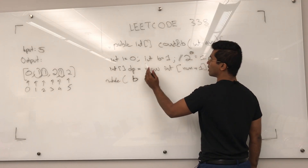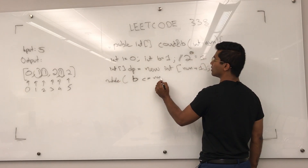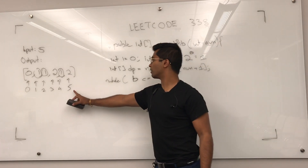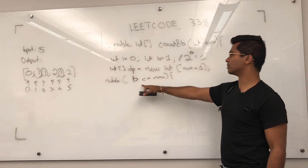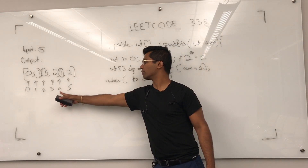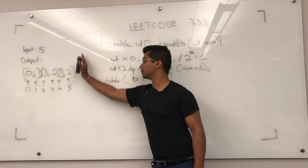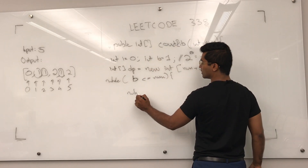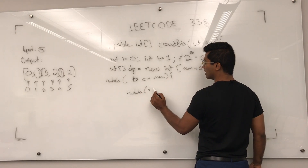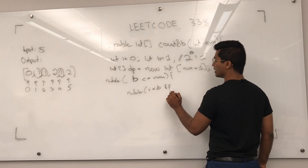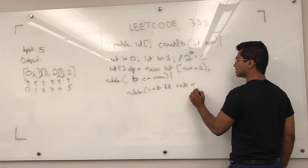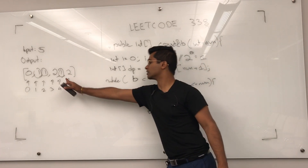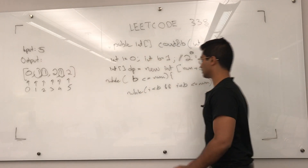We do a while loop where b is the current power of 2, and we do not want it to go more than num. For example, if b is going to be 2 to the power of 2 which is 4, we're going to loop one time before we hit the limit at 5. Then we have to check this conditional: while i is less than b and i plus b is less than or equal to num, because i is going to be a pointer which is going to increment every single time.